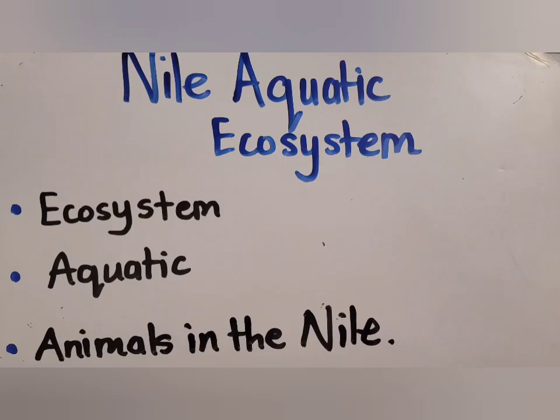Now let's understand the word 'aquatic.' Remember that 'aqua' means water — like aqua park is the water park. Aquatic means something related to water, so an aquatic animal would be a fish. An aquatic ecosystem means a natural place with water-related things in it — so a river is an aquatic ecosystem, but a forest is not because it's not made of water. An aquarium is aquatic but is not an ecosystem because it is not natural.